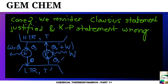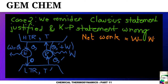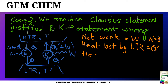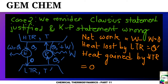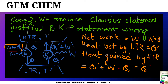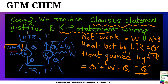The heat provided to the high temperature reservoir is Q' plus W. The net work in the whole cycle is W minus W equals zero. Heat lost by the LTR is Q', and heat gained by the HTR is Q' plus W minus Q. Since W equals Q, this simplifies to Q'. There is no net work done, but there is complete transfer of heat from low to high temperature — so the Clausius statement is also not justified, confirming that both statements are equivalent.